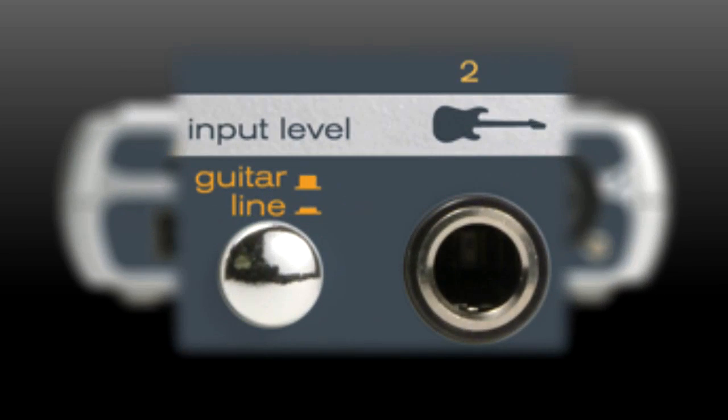To record a guitar or bass, plug your cable into the ¼-inch input labeled 2 with a guitar icon. If you have a keyboard or synthesizer with a line level output, push the silver guitar line button in for line and connect to the same ¼-inch input.